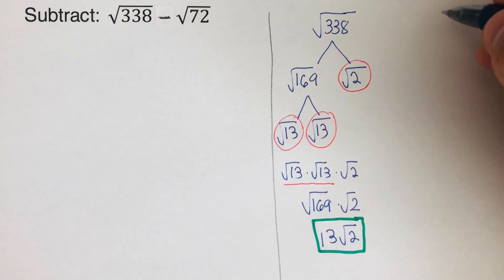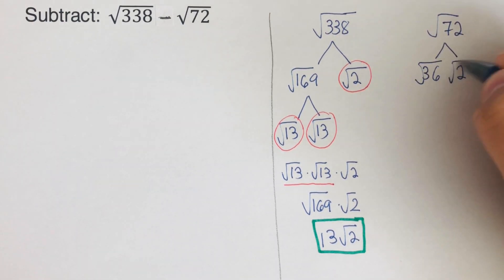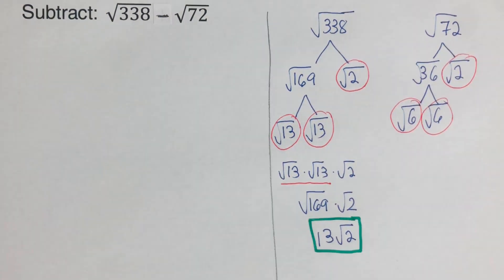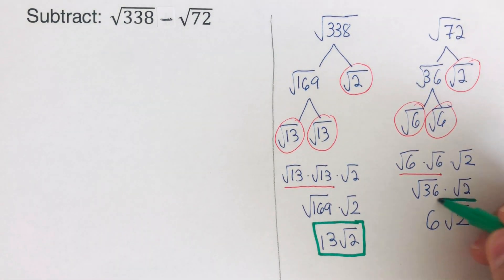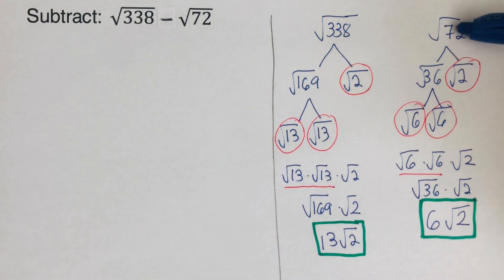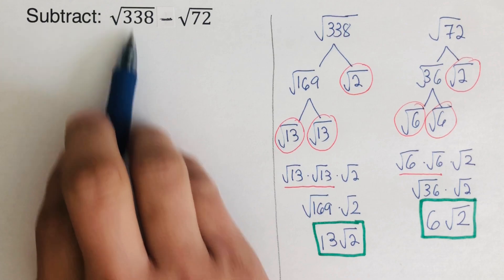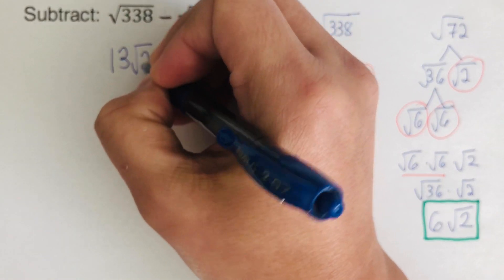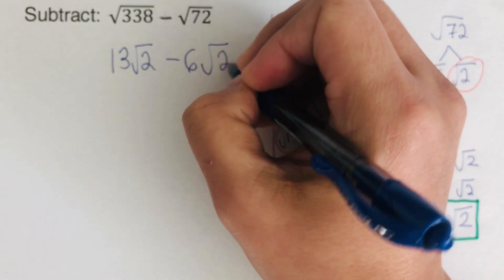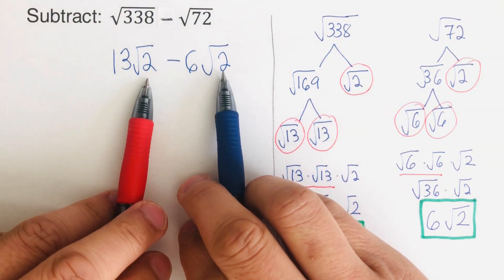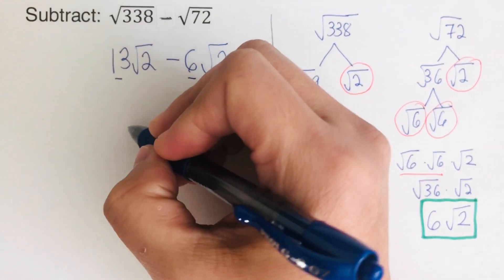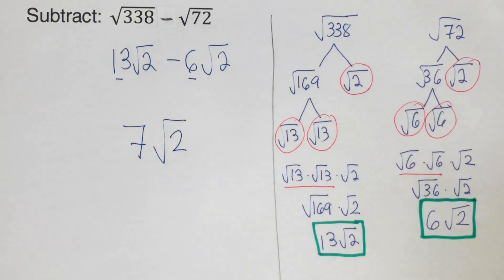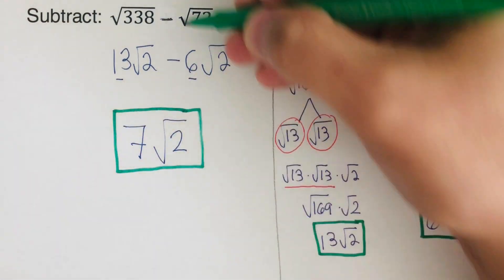Now let's do the square root of 72. I simplified it and it came out to 6 square root of 2. So we have 13 square root of 2 minus 6 square root of 2. They already have the same radicand, which is 2. So we subtract only the coefficients: 13 minus 6 is 7, and we keep the radicand square root of 2. The difference between these two radicals is 7 square root of 2.